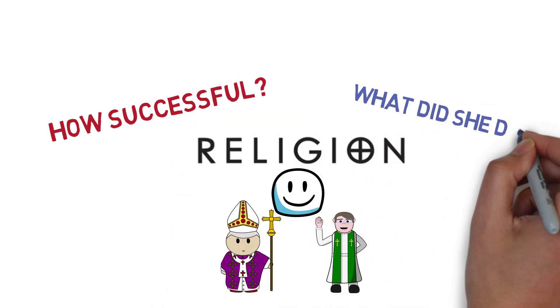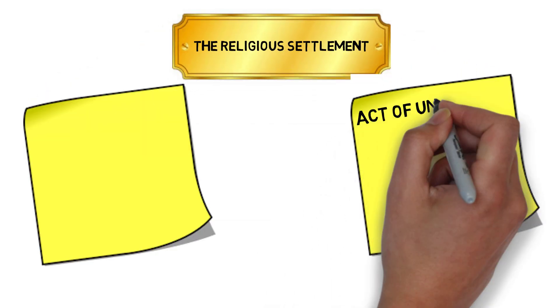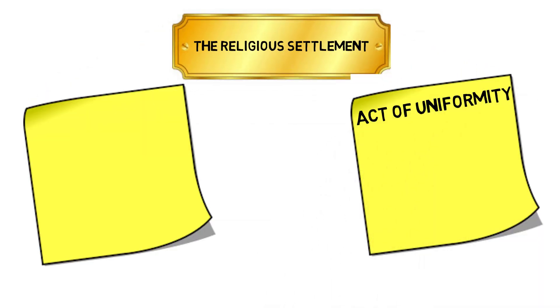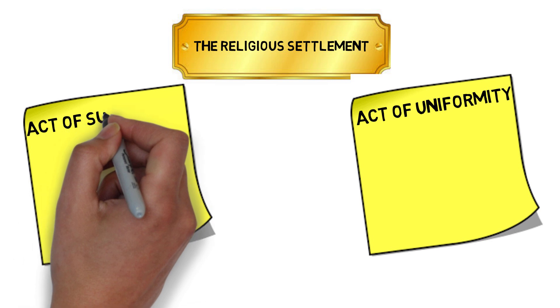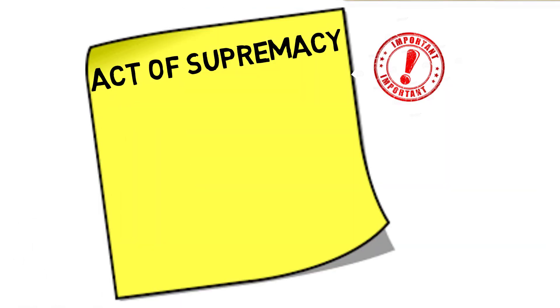We're going to have a look at how successful she was in doing that and what the religious settlement actually looked like. There are two parts to the religious settlement that you need to know about: one is the Act of Uniformity and the other is the Act of Supremacy.